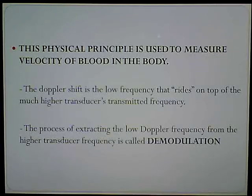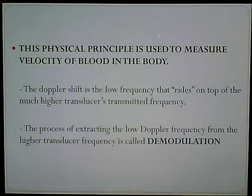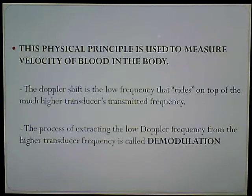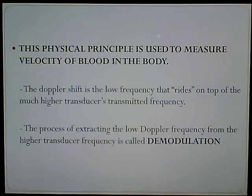It's that extra frequency that is produced when we hit moving red blood cells with our sound beam. The process of extracting the low Doppler frequency from the high transducer frequency is called demodulation — basically just skimming off the top of that extra frequency so we can process it.